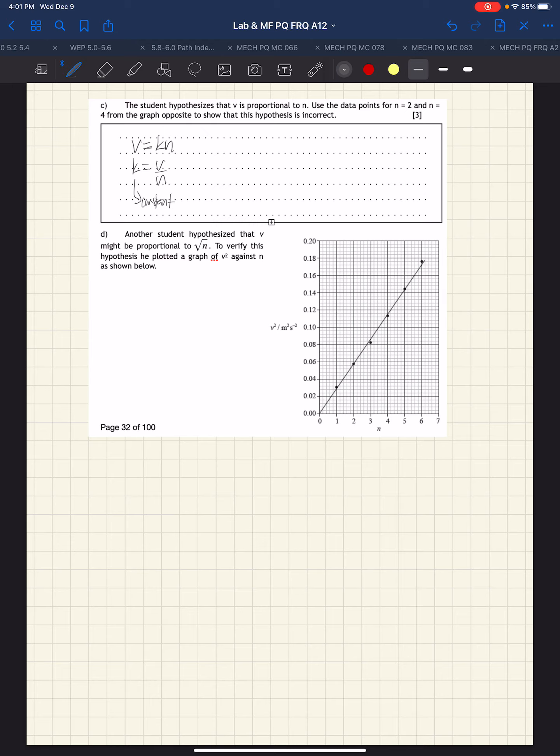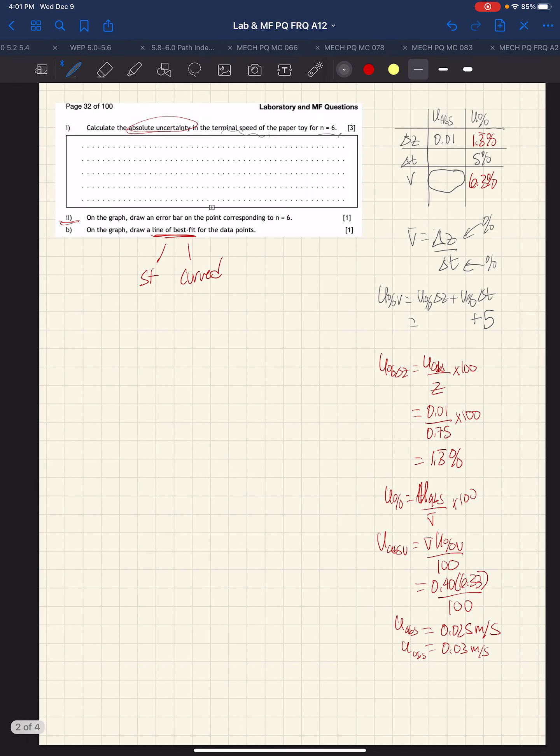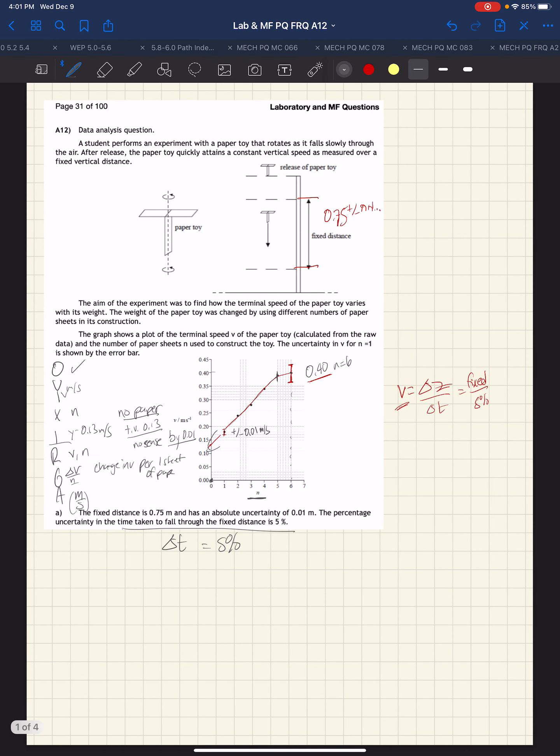We need to show that it's incorrect. The way we could do this, it says use points 2 and 4, but we should always use as many points as we possibly can. So I'm going to go back to the data and pull the data points and calculate that ratio.